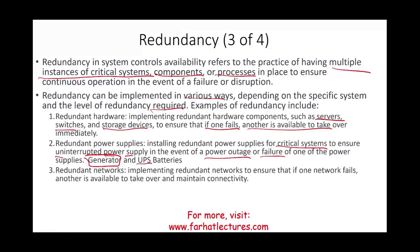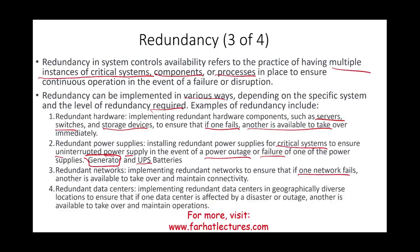Redundant networks ensure that if one network fails, another maintains connectivity. Redundant data centers in geographically diverse locations ensure that if one data center is affected by a disaster or outage, another is available to maintain operations. For example, if you operate in Florida, you might have a backup in New York or Los Angeles. If you're in Los Angeles, you might have a backup in Arizona or Washington state — geographic diversification is another form of redundancy.